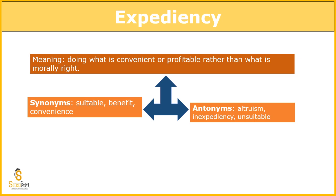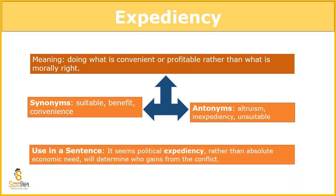Antonyms of expediency include altruism and unsuitable. Altruism is something we do for others — we can say selflessness. Use in sentence: it seems political expediency rather than absolute economic need will determine who gains from the conflict — meaning a decision is being made that is only politically convenient and profitable, while economically it is devastating, yet it is being taken because of certain things.